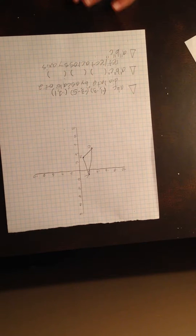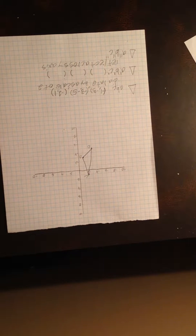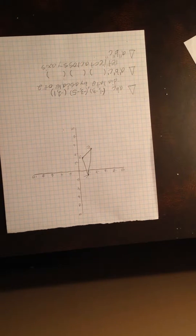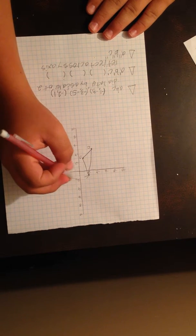So for A, negative 1 times 2 is negative 2, and negative 3 times 2 is negative 6, so negative 2, negative 6.